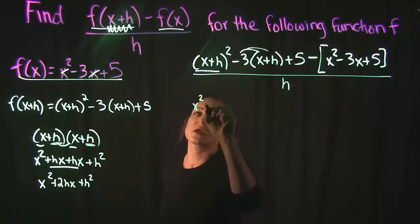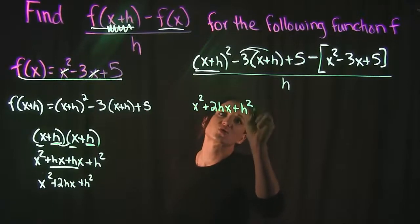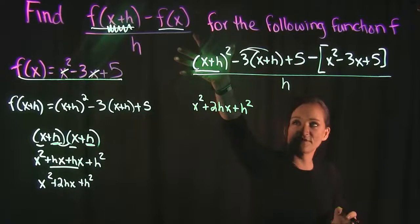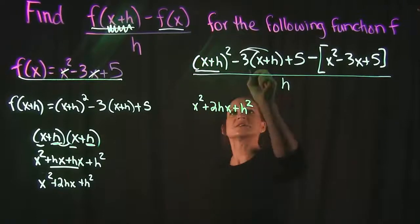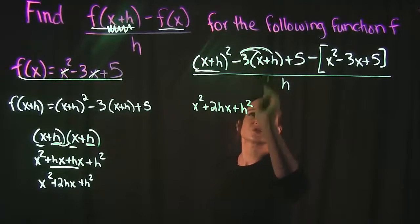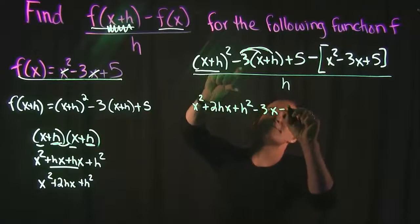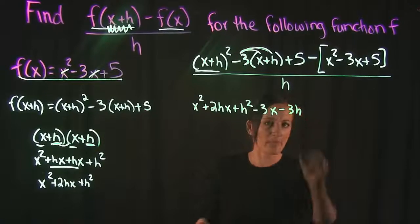x squared plus 2hx plus h squared is what we get when we square that first piece. Now we're going to distribute this minus 3, and we need to distribute it to the x and also to the h. So that's negative 3x minus 3h plus 5.